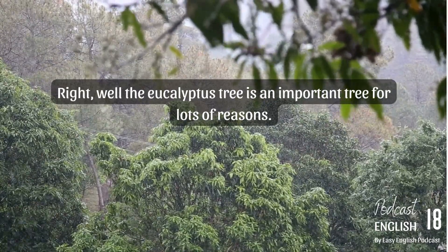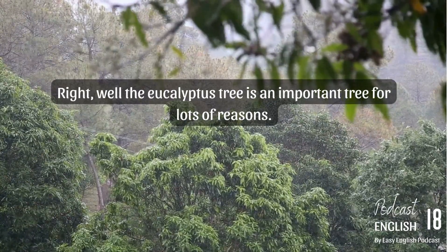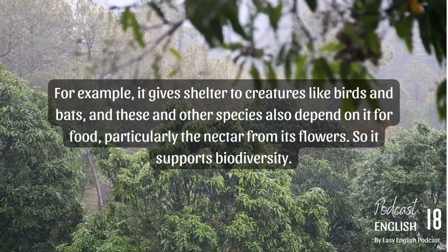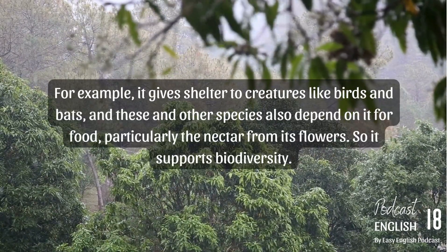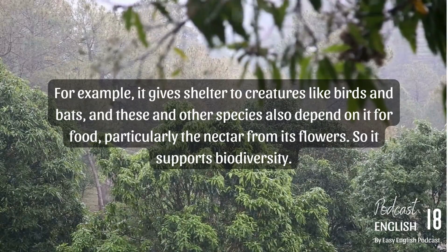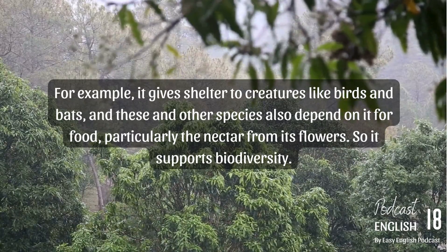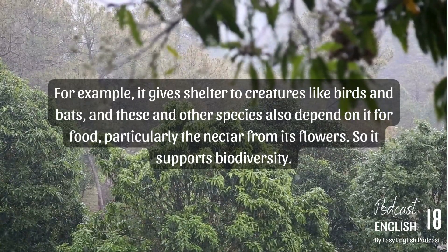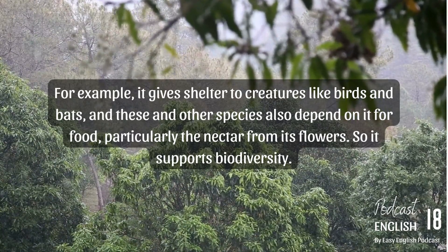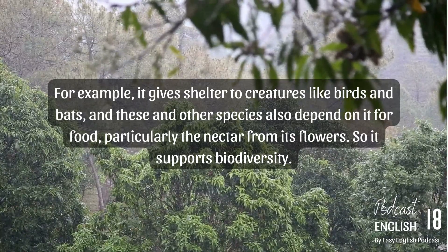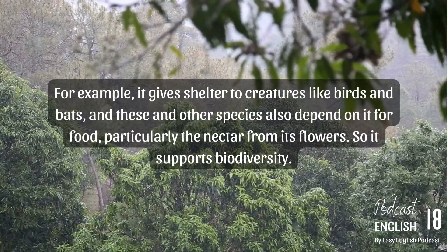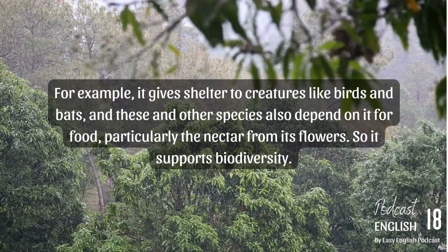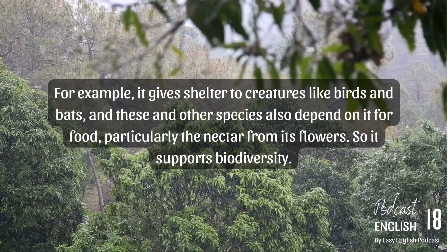The eucalyptus tree is an important tree for lots of reasons. For example, it gives shelter to creatures like birds and bats. And these and other species also depend on it for food, particularly the nectar from its flowers. So it supports biodiversity.